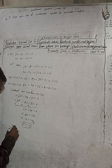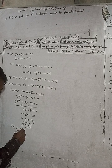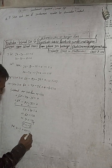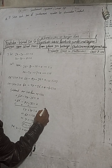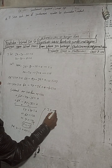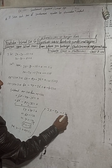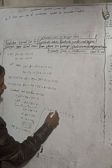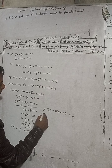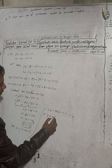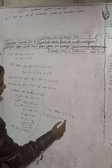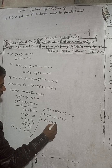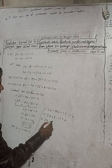Now put y equals minus 2 in equation 1. The equation is 2x minus 3y minus 2 is equal to 0. So in place of y, substituting minus 2: 2x minus 3 times minus 2 minus 2 equals 0. This implies 2x plus 6 minus 2 is equal to 0. This implies 2x plus 4 equals 0, so 2x equals minus 4.